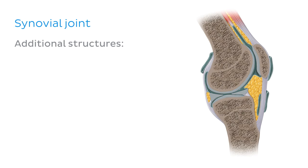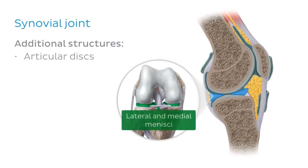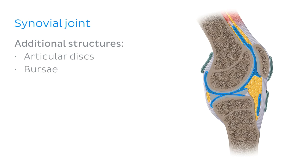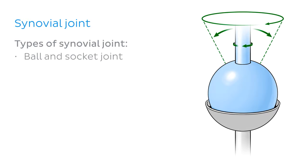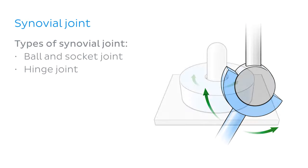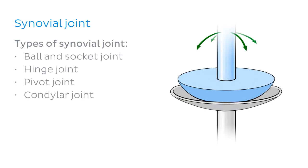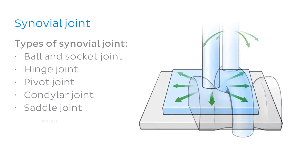Additional structures may also be found within synovial joints, such as articular discs. We can see examples of these in the knee joint — the medial and lateral menisci. We may also see bursi, which are small sacs lined by a synovial membrane and filled with synovial fluid. The bursi act to reduce friction caused by muscles and tendons located over bony joints. It's worth mentioning that synovial joints can be further subclassified according to the shape of their articular surfaces and their range of motion. These include the ball and socket joint, the hinge joint, the pivot joint, the condylar joint, the saddle joint, and the plane joint.